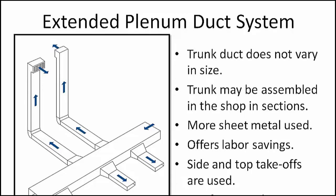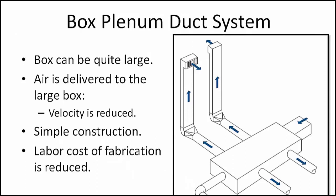The box plenum duct system, shown here, differs from the extended plenum in the size of the plenum. The box can be quite large — in some cases 3 feet wide and 10 inches deep — big enough to fill a hallway ceiling space. Air from the system blower or fan is delivered to this large box, where the air velocity is greatly reduced. From the box, the air is distributed through several individual branch ducts to the various rooms of the house. In cases where this system can be effectively installed, it has certain advantages over the trunk duct system: it is simple in construction, labor costs of fabrication are reduced, and it is very common with a flex duct branch system.